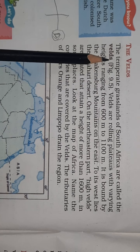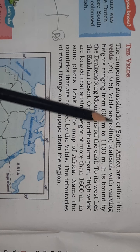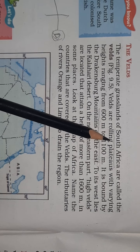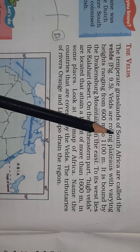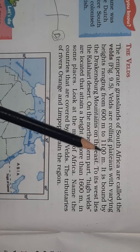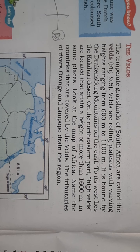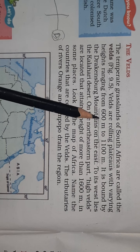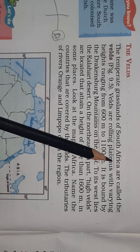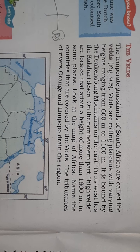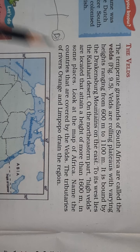Our next topic is the Velds. The temperate grassland of South Africa is called the Velds. Let us look at the difference: the temperate grassland of North America is called the Prairies, and the temperate grassland of South Africa is called the Velds.